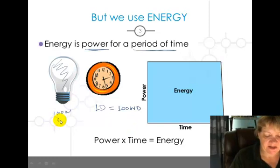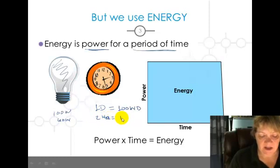If it was a 60 watt bulb and you ran it for two hours, that would be 120 watt hours.